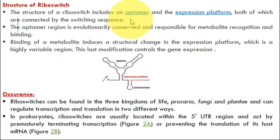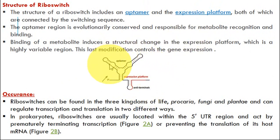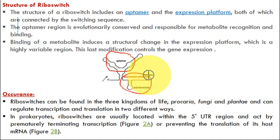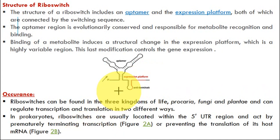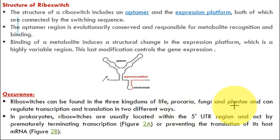This negative feedback mechanism happens in a very limited amount of time because there is an immediate regulation at the level of the mRNA. The riboswitch basically consists of two important regions: one is called the aptamer and the other is called the expression platform. The aptamer is the region where the ligand binds, and the expression platform controls the expression of the gene at the level of mRNA synthesis or protein synthesis. Riboswitches mostly occur in prokaryotes, fungi, and plants, but the number reported in eukaryotes is comparatively less.